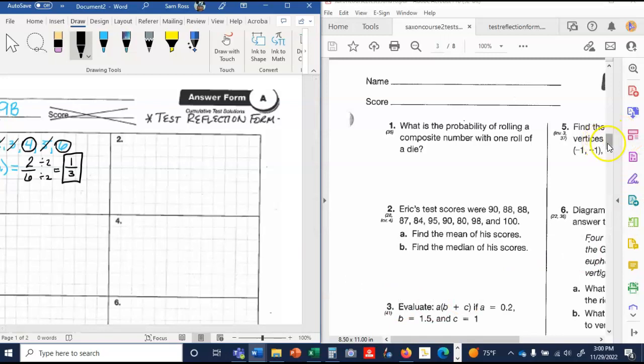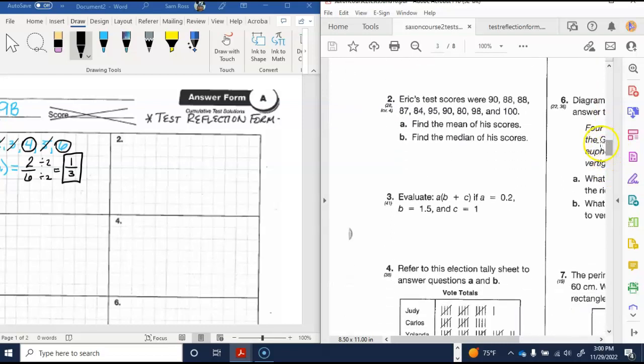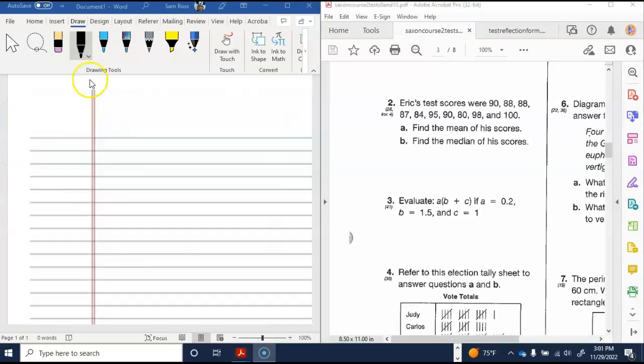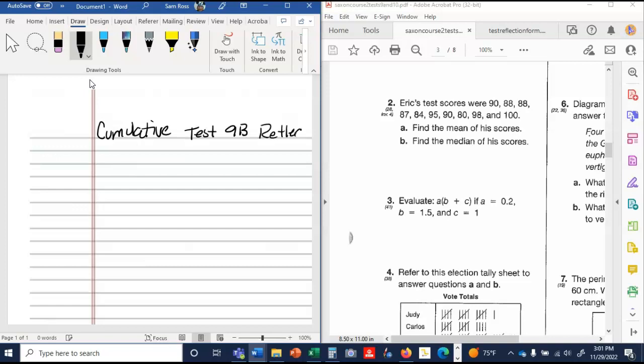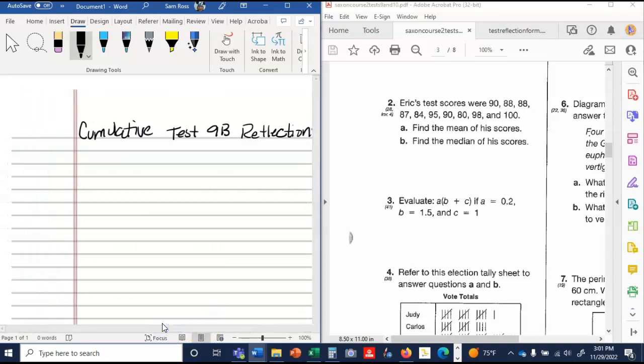Number two is going to take a little bit more space. We're finding the mean and the median of the scores. So I would do this on notebook paper and attach it to your test reflection form. This is cumulative test 9B reflections. And we're doing number two. So the first thing we want to find is the mean, which is the average. Most of you actually got this correct. The average is the sum over how many.